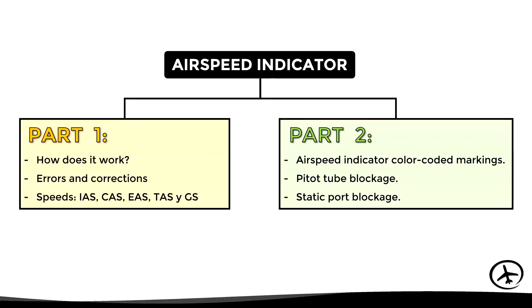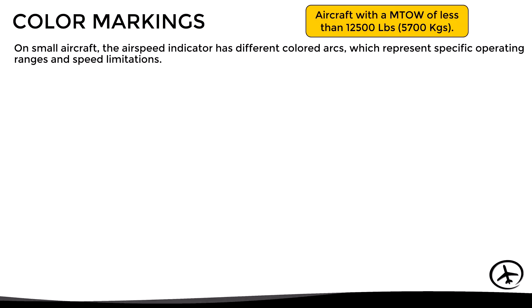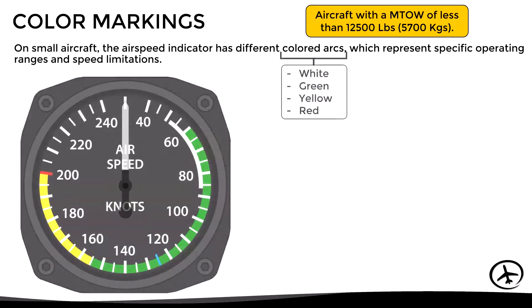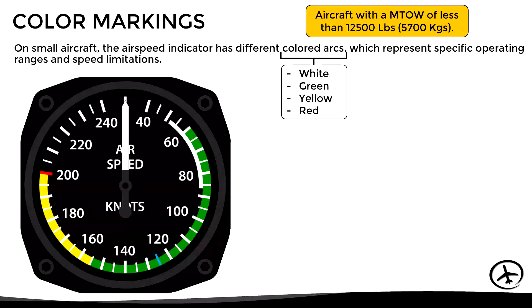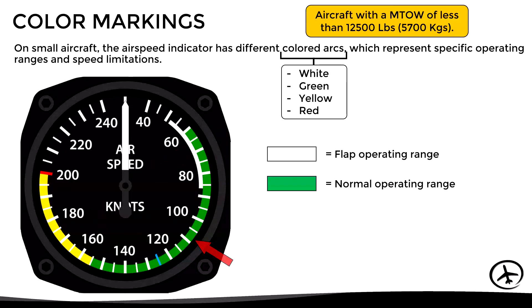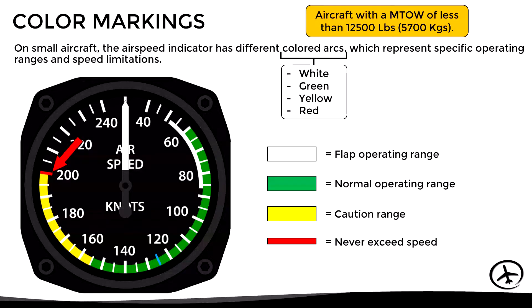Let's begin with the color-coded markings of the instrument. In light aircraft with a maximum takeoff weight of less than 12,500 pounds or 5,700 kilograms, the airspeed indicator includes a series of colored arcs which represent specific operating ranges and speed limitations. Specifically, the colors used are white, green, yellow, and red. White represents the flap operating range, green the normal operating range, yellow the caution range, and red the never-exceed speed.